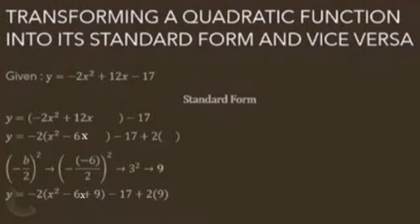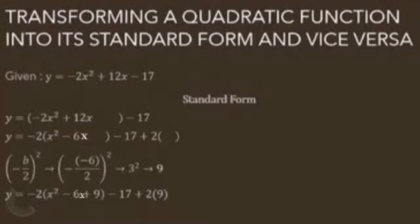In this function, the value of b is negative 6, so negative times negative will be positive. And then 6 divided by 2 is 3, and 3 squared is 9, so the value will be 9.